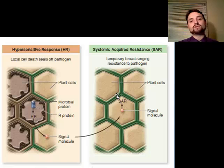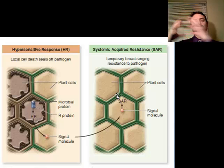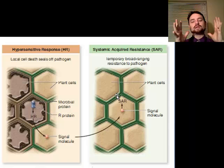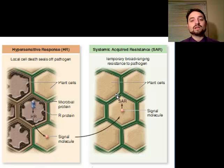This helps the plant localize or seal off the infected area. If the infection is out in a branch, it seals that branch off so the disease doesn't spread to the whole plant — it's kind of like 'kill a limb, save the plant.' If you don't kill the limb, in the end the whole plant dies.